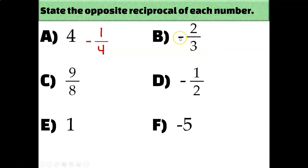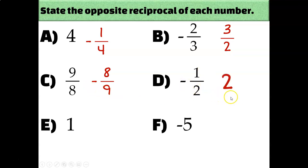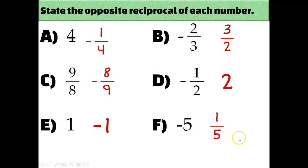The opposite reciprocal of −2/3 is +3/2 — opposite sign and upside down. The opposite reciprocal of 9/8 would be −8/9. The opposite reciprocal of −1/2 would be positive 2 (or 2 over 1). One is kind of weird because the opposite reciprocal of 1 is −1: one over one flipped is still one over one, which simplifies to 1, so the opposite is −1. And the opposite reciprocal of −5 would be positive one-fifth.